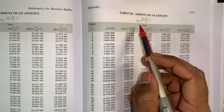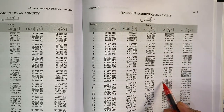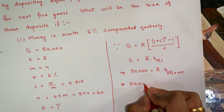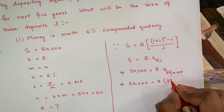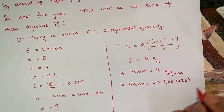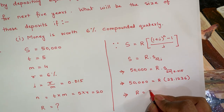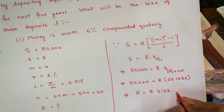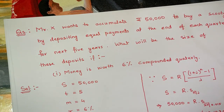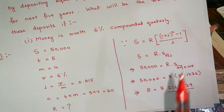Looking up the S(n, i) table at the back of the book, for i = 0.015 and n = 20, we get S(20, 0.015) = 23.1236. So 50,000 = R × 23.1236. Dividing both sides, we get R = ₹2,162.29. This means Mr. X should set aside ₹2,162 at the end of every quarter so that he has ₹50,000 at the end of 5 years to buy a scooter.